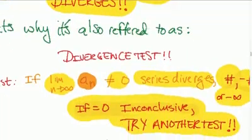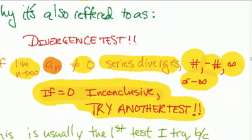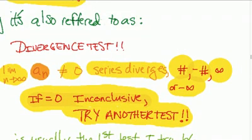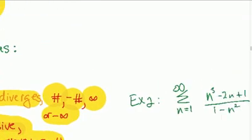And if it doesn't equal zero when we take the limit as n approaches infinity, it diverges. If it equals zero, try another test. So let's look at these examples.